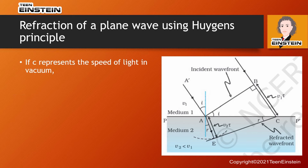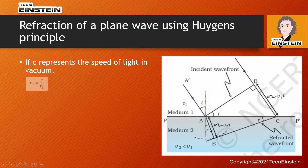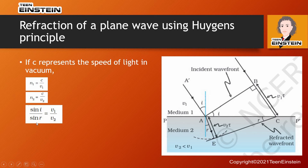Let us assume C represents the speed of light in vacuum. The refractive index N1 equals C / V1, and the refractive index of medium 2 is N2 = C / V2. So replacing V1 with C / N1 and V2 with C / N2 in the equation sine I / sine R = V1 / V2, we substitute accordingly.